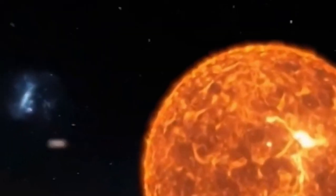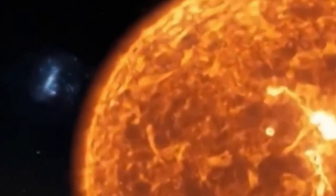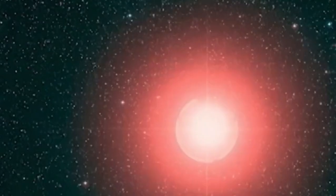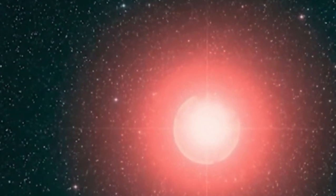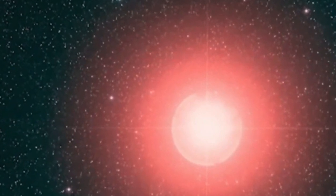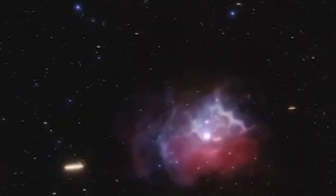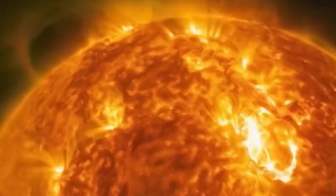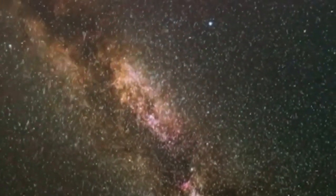Betelgeuse's relatively proximate proximity to Earth, encompassing a span of approximately 725 light-years, amplifies the intrigue, for any prospective supernova would manifest as an unmistakable spectacle observable from our vantage point, proffering a singular opportunity to behold such a celestial spectacle firsthand. Nonetheless, this begets the question: what implications does this dimming portend for Betelgeuse's future? Is it a prelude to an imminent supernova cataclysm, or merely an extraordinary interlude in the star's protracted and labyrinthine chronicle?